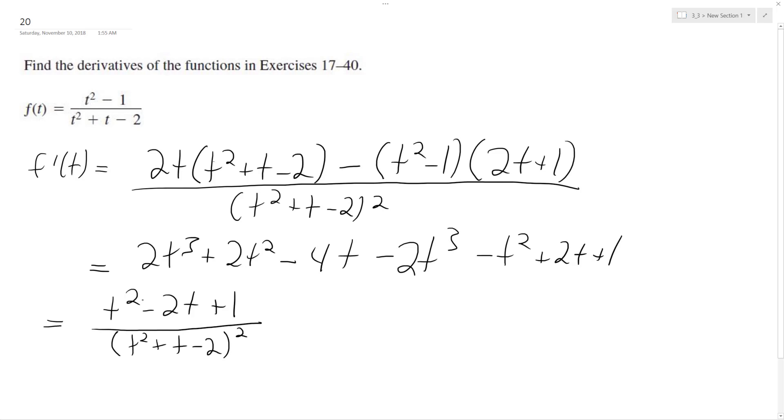And ultimately what we can reduce everything down to. So continuing on here, the numerator reduces down to t minus 1 squared. And the denominator, this actually factors into t plus 2, t minus 1. And using laws of exponents here, I can turn this into t plus 2 squared, t minus 1 squared.